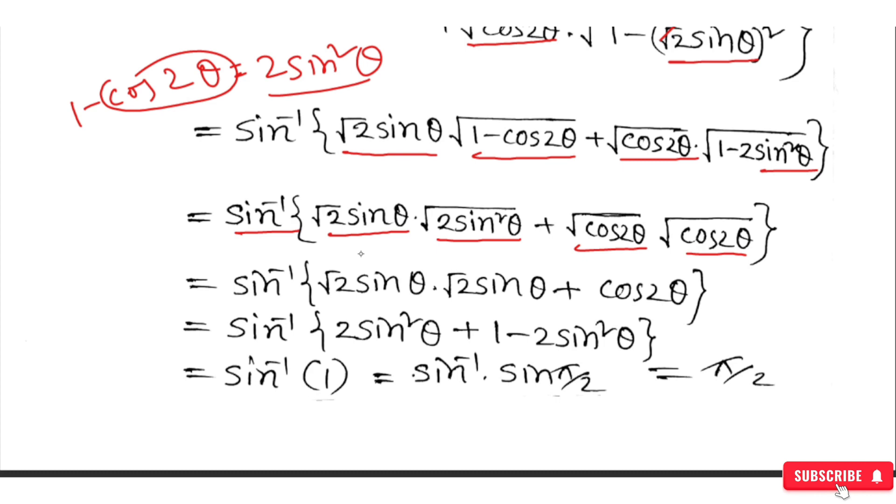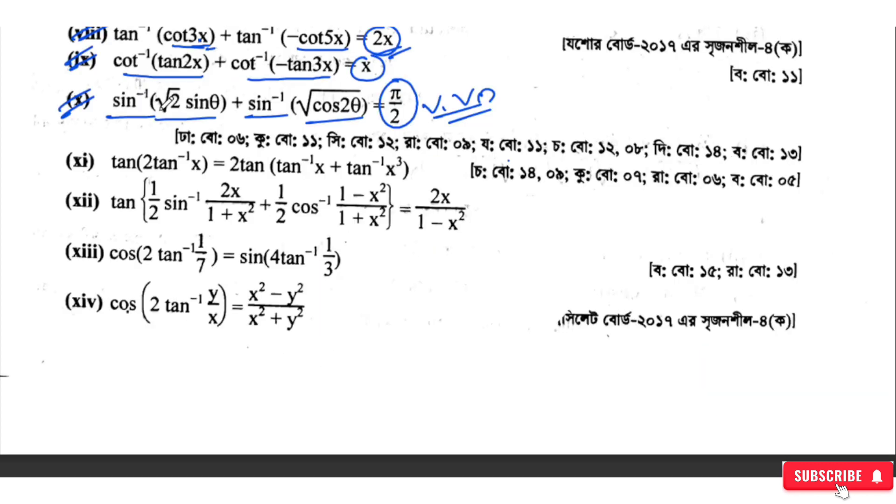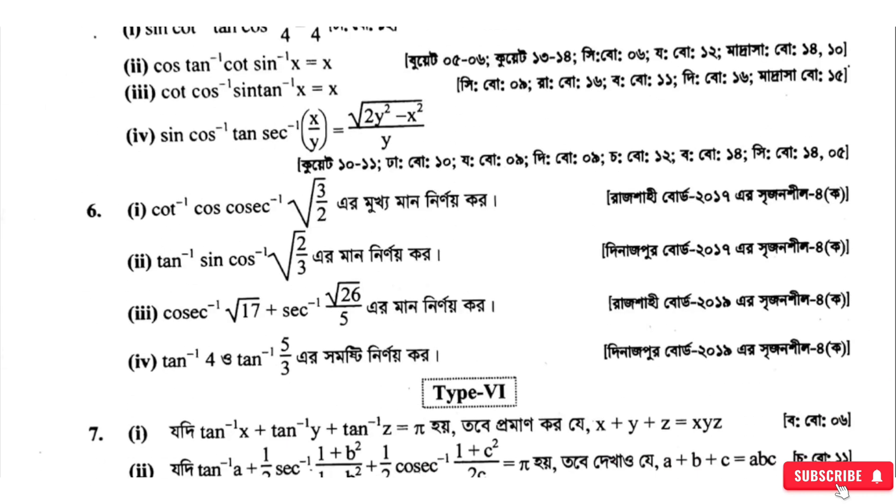Since cos 2θ equals 1 minus 2sin²θ, we get sin⁻¹ of (2sin²θ plus 1 minus 2sin²θ), which equals sin⁻¹(1), which equals π/2. Proved. That's something to prove. I think we're done. Thank you everyone for coming. Peace be upon you, take care.